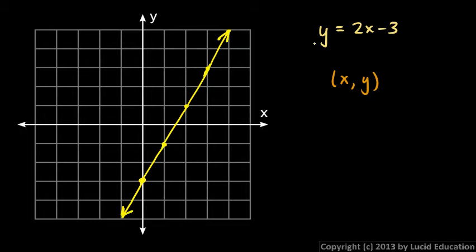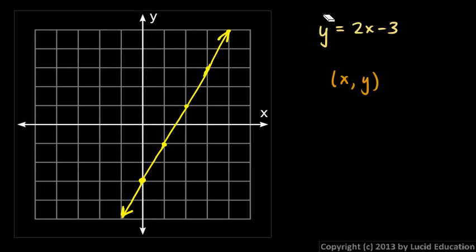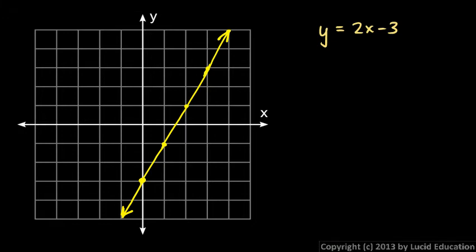This goes on forever in both directions, so we'll put the arrowheads on the end. Now this line is a graph of this equation, and what that means is that any point on this line should have an x and y value that will satisfy that equation. Let's look at a couple of examples. I'm going to look at this point right here, and you can see on the grid there that has an x value of 3 and a y value of 3. So the point 3 comma 3. X is 3, y is 3.